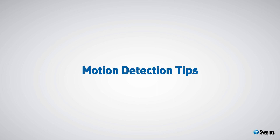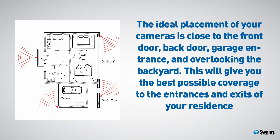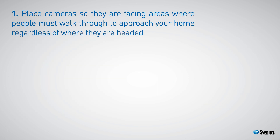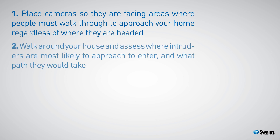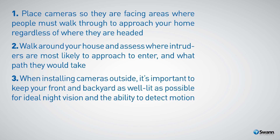Let's have a look at some motion detection tips. The ideal placement of your cameras is close to the front door, back door, garage entrance, and overlooking the backyard. This will give you the best possible coverage to the entrances and exits of your residence. Place cameras so they are facing areas where people must walk through to approach your home. Walk around your house and assess where intruders are most likely to approach and what path they would take. When installing cameras outside, it's important to keep your front and backyard as well lit as possible for ideal night vision and the ability to detect motion.